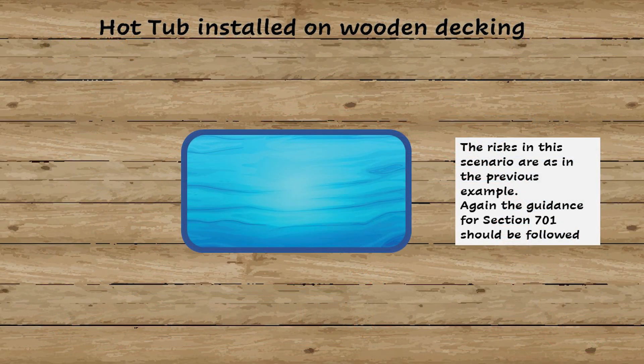In this scenario where the hot tub is installed on wooden decking, the risks are as before. So there again, 701 guidance should be followed.